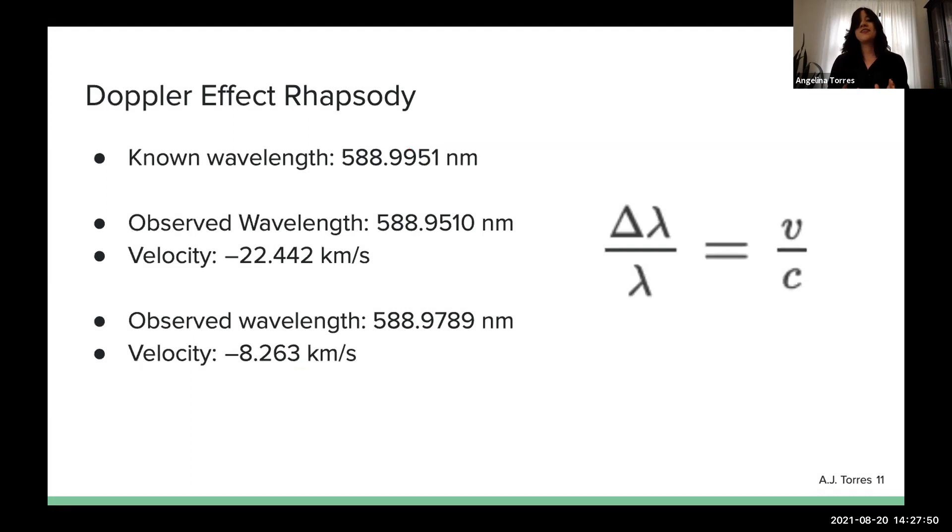This is good. We can collect these two wavelengths at these peaks, and we can compare them to the known rest wavelength. We return to our good old friend, the Doppler effect. We plug in our known wavelengths, our observed wavelengths, and we get characteristic velocities for this cloud passing in front of Tabby's star. These velocities are minus 22.4 kilometers per second, minus 8.26 kilometers per second. Excellent.